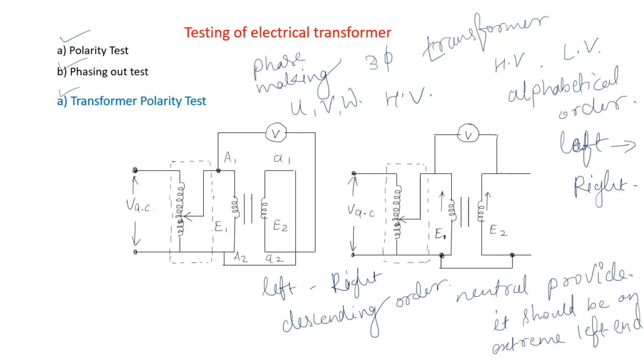Capital letters are used to indicate the HV side or HV winding, and small letters are used to indicate LV winding.